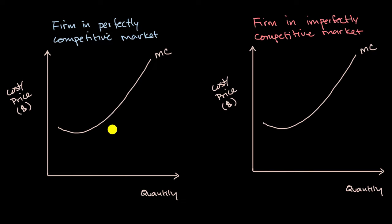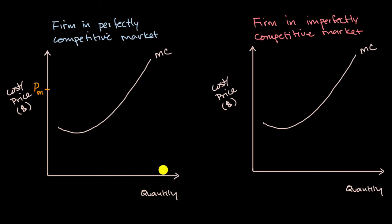In a perfectly competitive market, the firm is a price taker. There's going to be some market price — let's call this P sub M — for the good that they are producing. There are many producers producing this good, they're undifferentiated, and there are no barriers to entry, so they just have to be price takers. No matter how many units they produce, they get that same market price. So that market price defines their marginal revenue curve, which is essentially just a horizontal line.